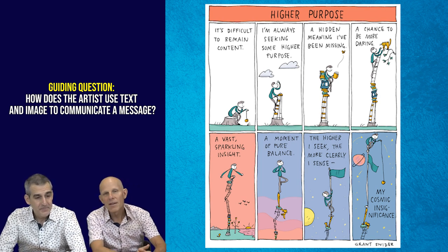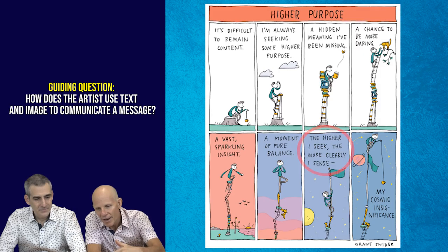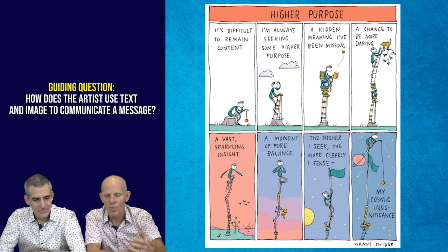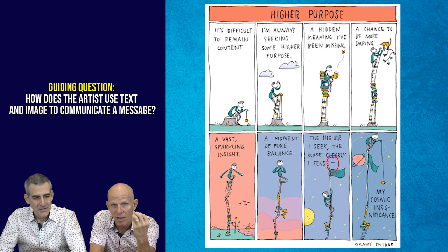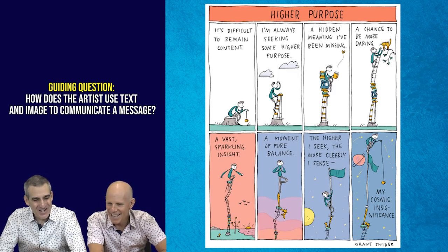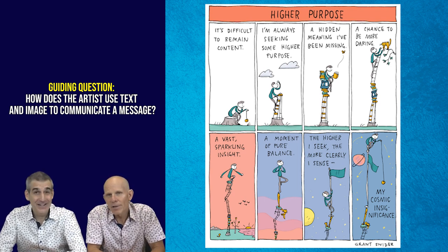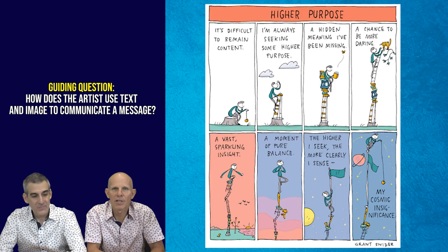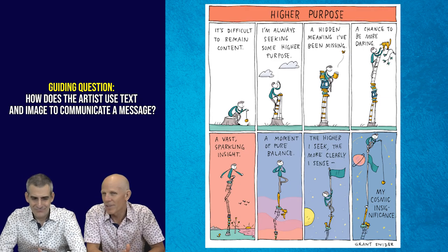In the penultimate panel, panel seven, 'the higher I seek the more clearly I sense—' he doesn't finish the sentence. We see him climbing up that pole even further with the flag there, and we get this sense of possibility because the sentence is unfinished - he's waiting for the last panel to hit us with his punchline. The use of the dash there is really skillfully done. The moon is in the sky and the cat is making a comeback, making us wonder if part of his realization is that he needs company.